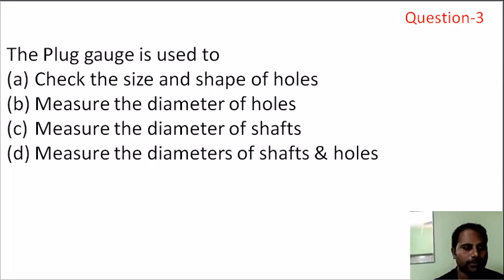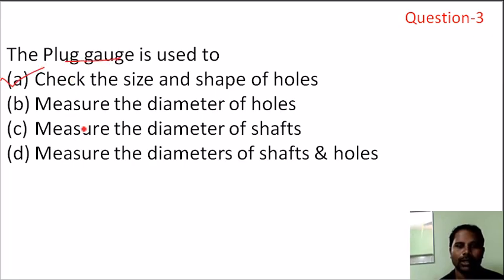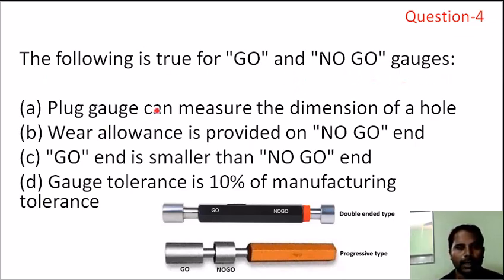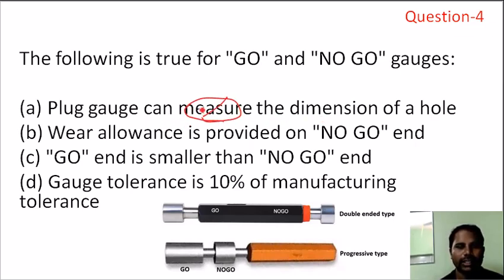Next, question number 3: which of the following is true for go and no-go gauges? If we have a no-go gauge, it is used to measure the dimension. If the gauge program is distributed, no-go is provided.